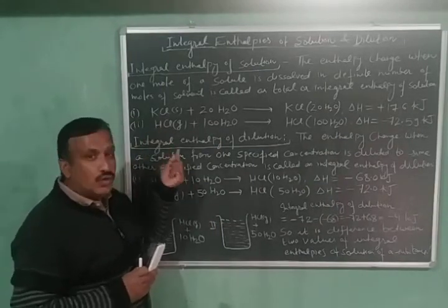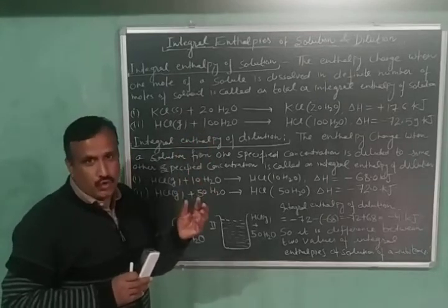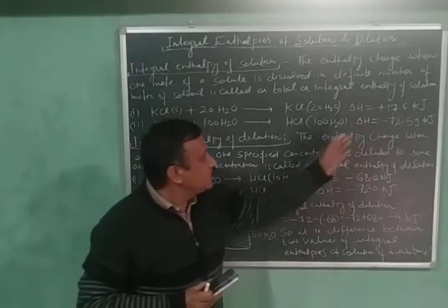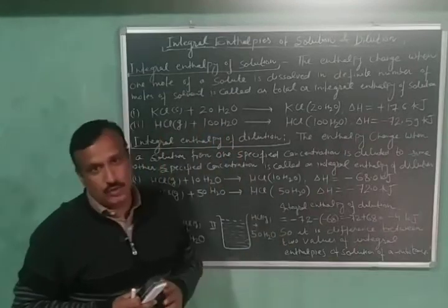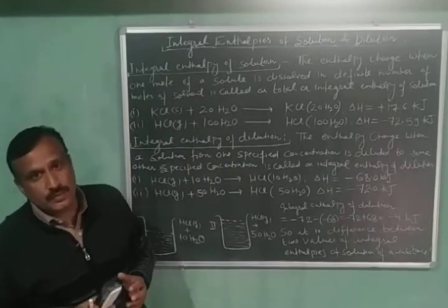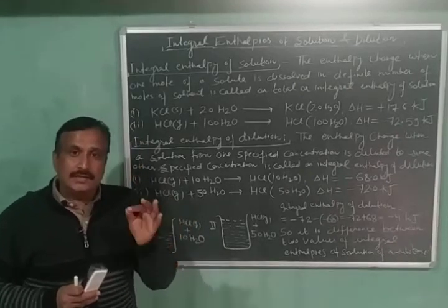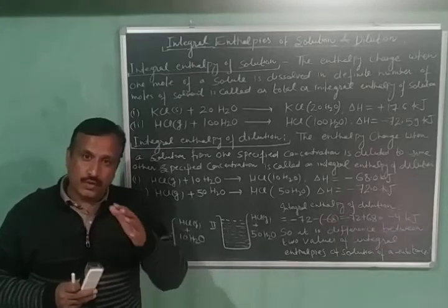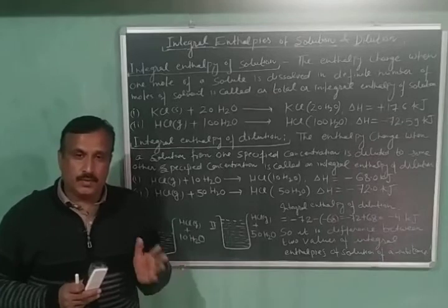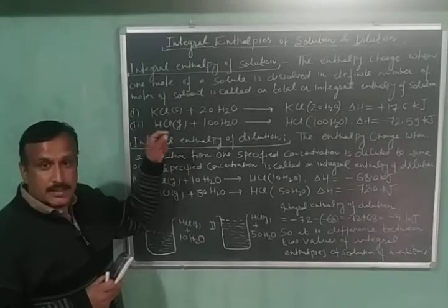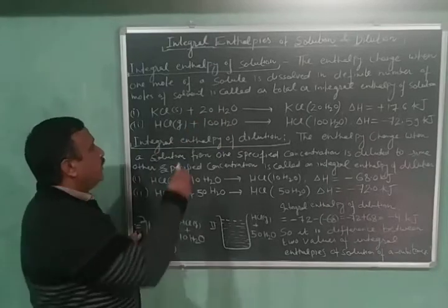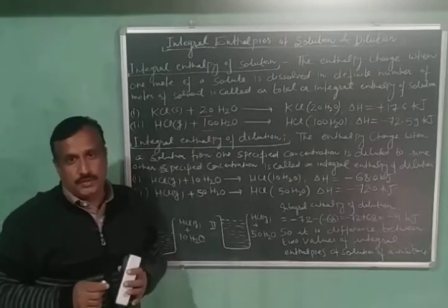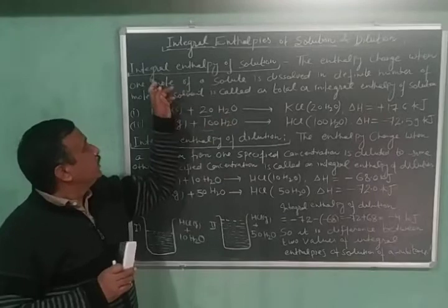In the second example, one mole of HCl is dissolved in 100 moles of water. Heat is evolved and the integral enthalpy of this solution, delta H, is equal to minus 72.59 kilojoules per mole. Whenever the integral enthalpy of solution is reported, the number of moles of solvent required to dissolve one mole of solute must be indicated, as shown in these examples.